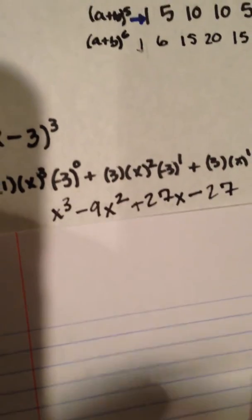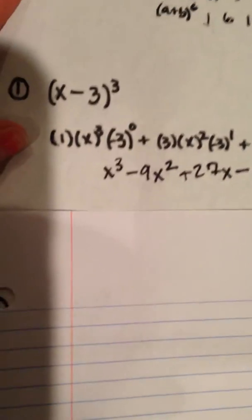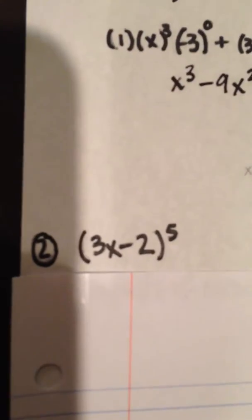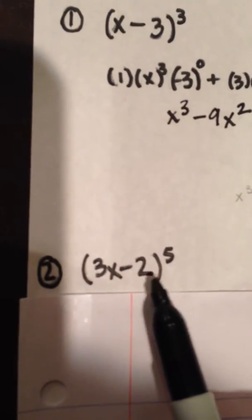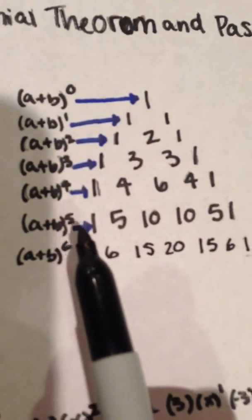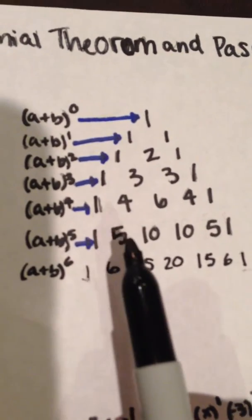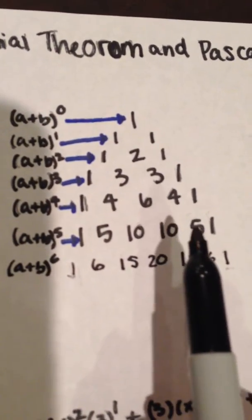Let's try one that's a little bit bigger. This is 3x minus two to the fifth power. So we can look up here. We see that we'll be multiplying our terms by one, five, ten, ten, five, and one.